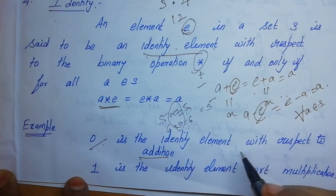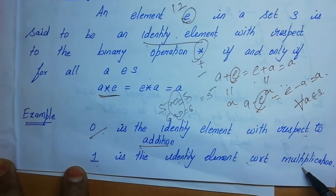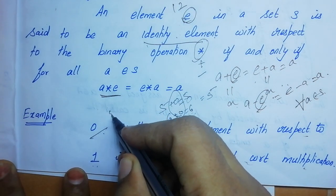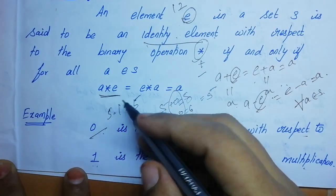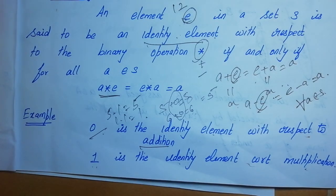That is why 0 is an identity element with respect to addition, and 1 is an identity element with respect to multiplication. For example, 5 into 1 equals 5, and any number multiplied by 1 gives the same number. So 0 is the identity for addition and 1 is the identity for multiplication.